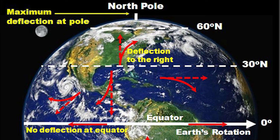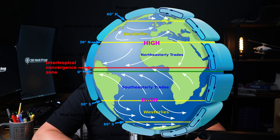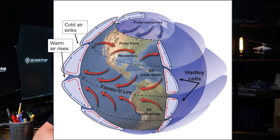In the Northern Hemisphere, the Coriolis force deflects moving air to the right. So if air is moving from the equator towards the pole, it will start curving to the right. This is why winds blow from west to east in much of this hemisphere, forming what we call the Westerlies.